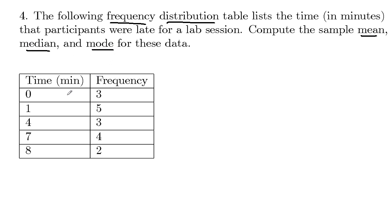This is not the original data here. What this means is that you've got a zero and it's repeated three times. So if you wanted the original set of data it would be zero, zero, zero three times, and then you'd have five ones and then three fours and then four sevens and then two eights. You could reconstruct the original data.